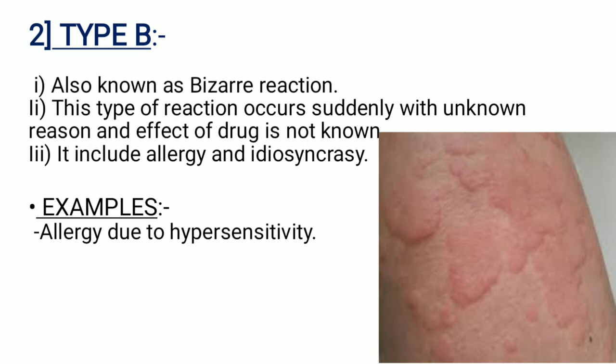Type B is also known as a bizarre reaction. This type of reaction occurs suddenly with an unknown reason and the effect of the drug is not known. It includes allergies and idiosyncracy. For example, anergy due to hypersensitivity.